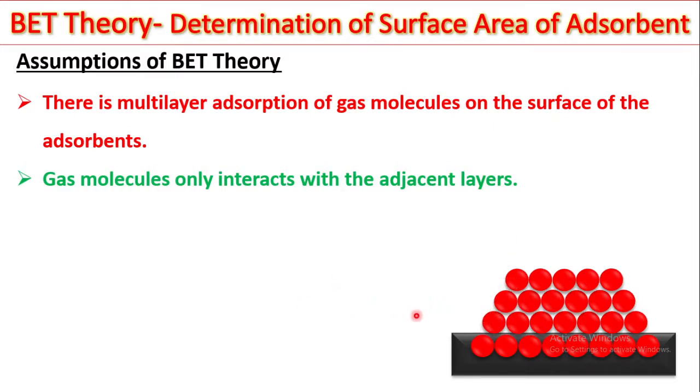Langmuir considered that there is only monolayer adsorption on the surface of adsorbent. But here, the BET consider that there is more than one layer of adsorption over the surface and gas molecule interact with the adjacent layer only.